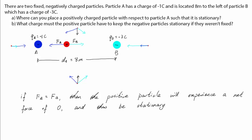If that is not the case, then we have done something wrong. So let's call the distance between the positive particle and particle A, dA. Which means the distance between the positive particle and particle B will be 8 minus dA.